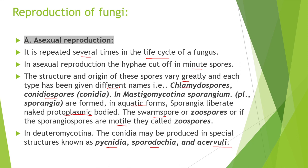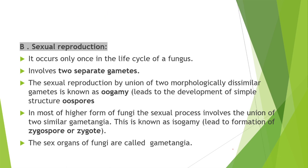Sexual reproduction occurs only once in the life cycle of a fungus and involves two separate gametes. Sexual reproduction by union of two morphologically dissimilar gametes is known as anisogamy. In most higher forms of fungi, the sexual process involves union of two similar gametangia, known as isogamy — where iso means similar. This leads to formation of zygospore and zygote. The sex organs of fungi are called gametangia.